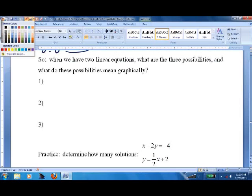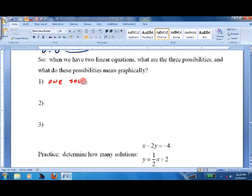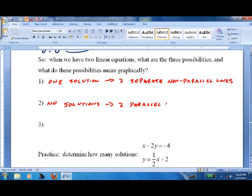So, when we have two linear equations, we have three possibilities. What are they? What do they mean graphically? Well, one solution. That means two separate non-parallel lines. And if we have no solutions, we have two parallel lines. And if we have infinitely many solutions, we have the same line.